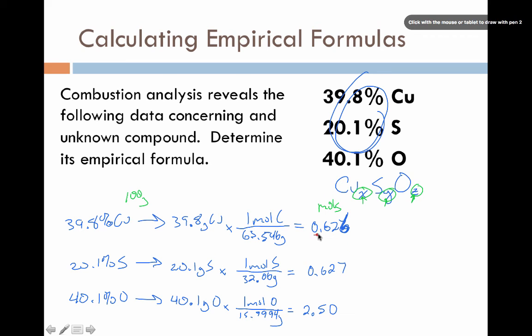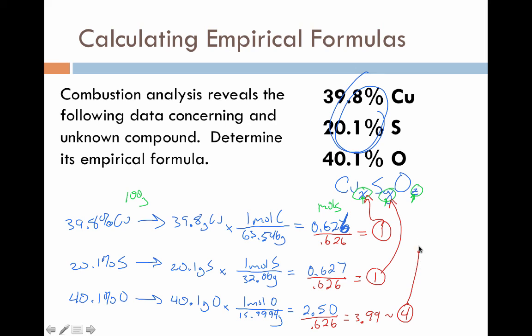One of the easiest ways to do that is simply by dividing all three of them by whatever the lowest value is. So we're going to divide these by 0.626. When we do the math in the calculator, we'll find out that this answer ends up being 1, this answer ends up being very close to 1, and this answer here ends up being 3.99, which is very close to 4. What this means is that the ratio of numbers of atoms means we have 1 copper atom, 1 sulfur atom, and 4 oxygens to get the empirical formula of CuSO4, which matches the formula from the beginning of the video.